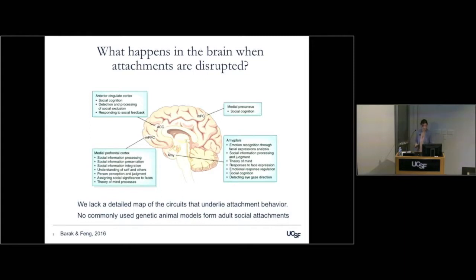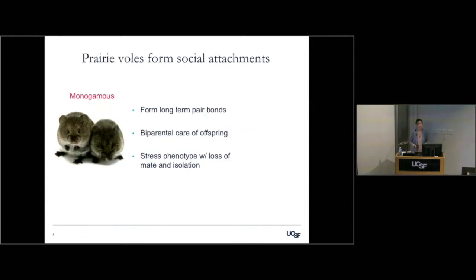For this reason, in the lab we use the prairie vole. This is a monogamous species — by that we mean they form long-term pair bonds. They also display higher-order affiliative interactions, so bonds between same-sex and co-housed animals, and show biparental care of offspring.